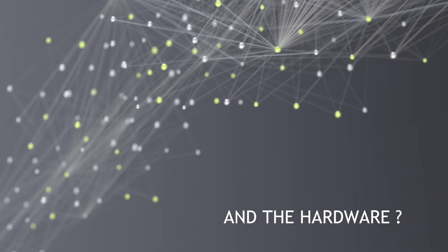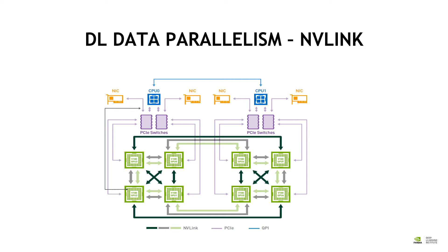Now let us look at the hardware. The hardware we will be using here is, for example, a DGX1. A DGX1 has two CPUs on the top and eight V100 GPUs. The particular thing we have to recognize and use is the NVLink interconnect — there is a dedicated NVLink interconnect between the GPUs, shown here in green. We will have to use this NVLink in order to distribute our computation.